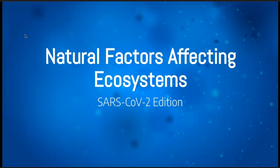For today's lesson we are going to look at the natural factors that affect ecosystems. We talked in our last lesson about cycles of matter and at the end we looked at how biodiversity can have an effect on those cycles and why it's important that we have a very diverse number of species in an area to make sure those cycles can continue. So today we're going to look at some natural factors that affect ecosystems.